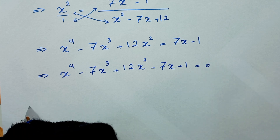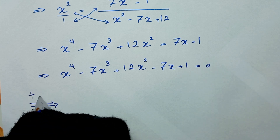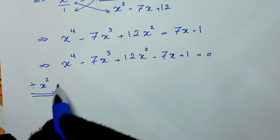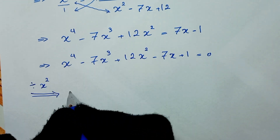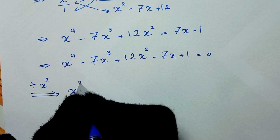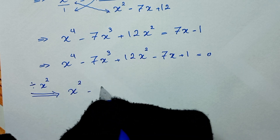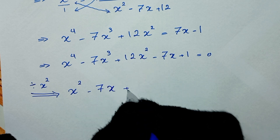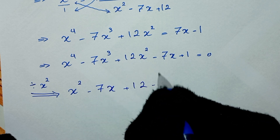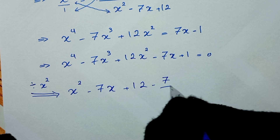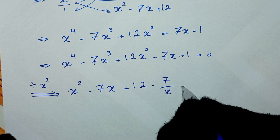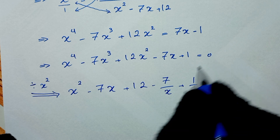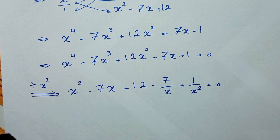Our next step: we divide both sides of the equation by x squared. So x to the 4th divided by x squared is x squared, negative 7x cubed divided by x squared is negative 7x, 12x squared divided by x squared is 12, negative 7x divided by x squared is negative 7 over x, and 1 divided by x squared is 1 over x squared. This equals 0.